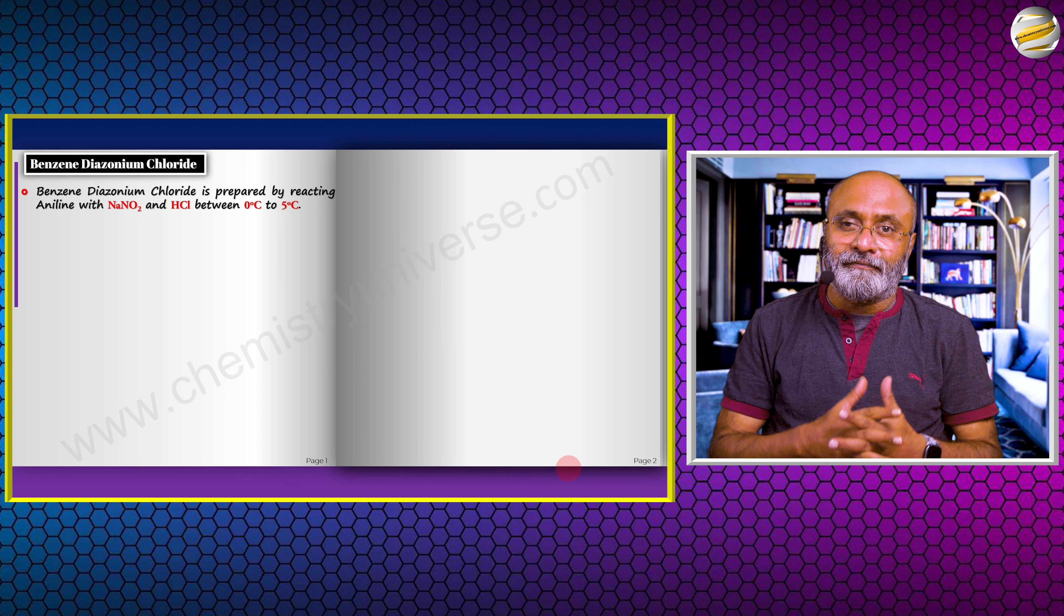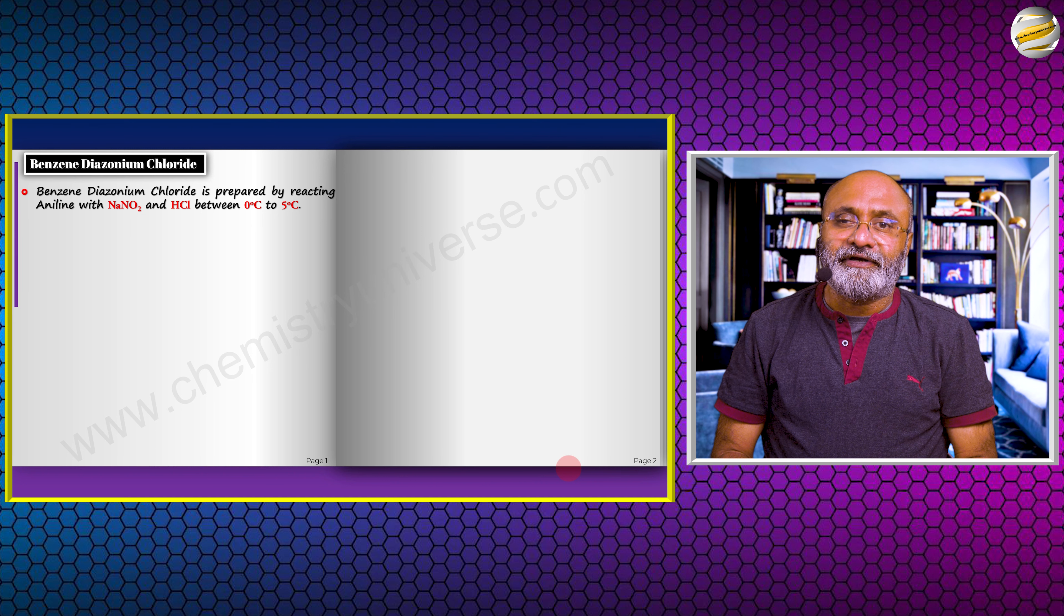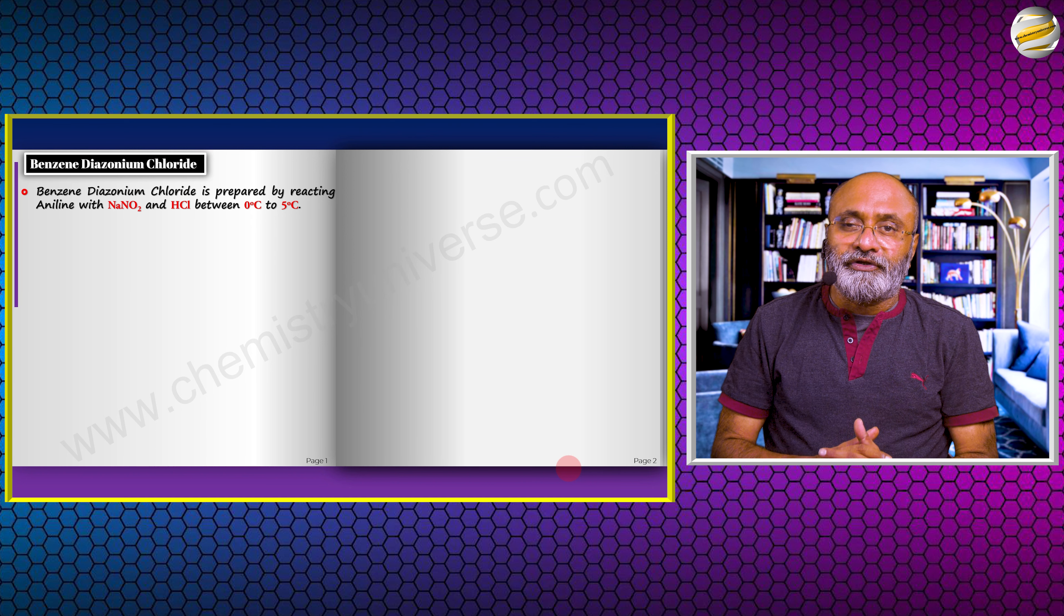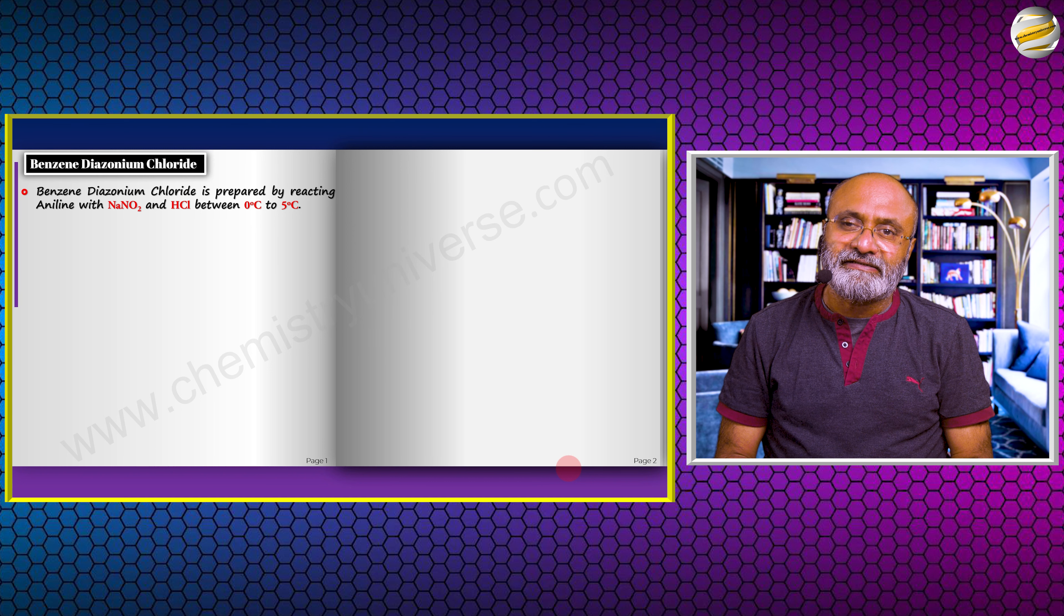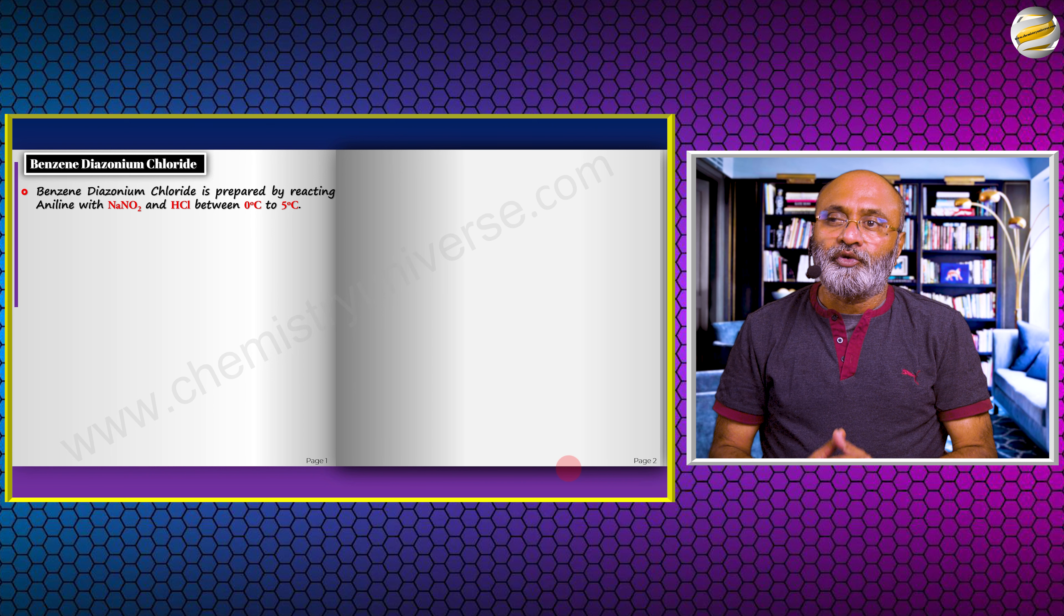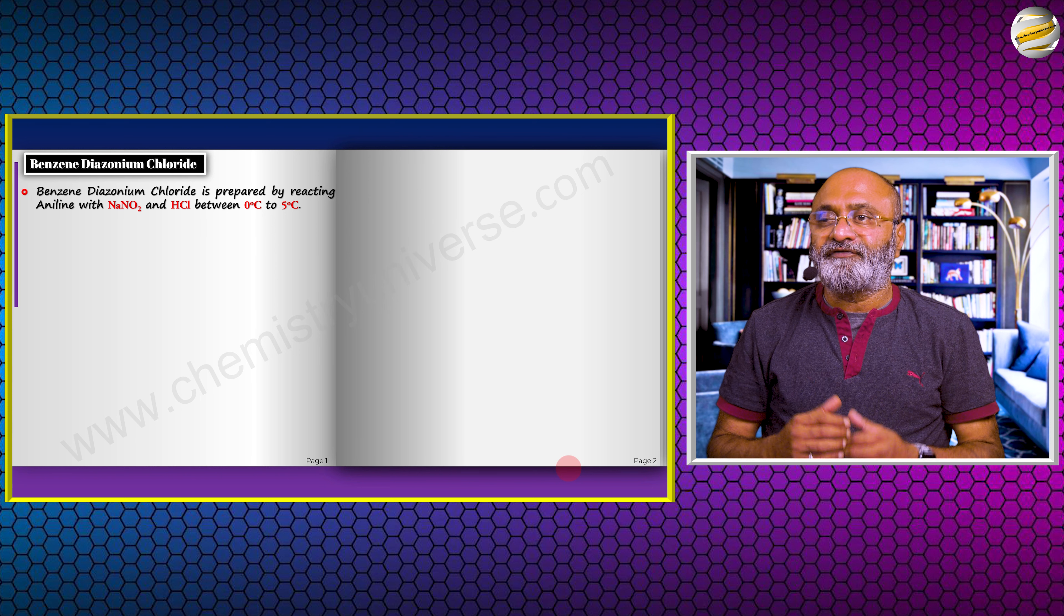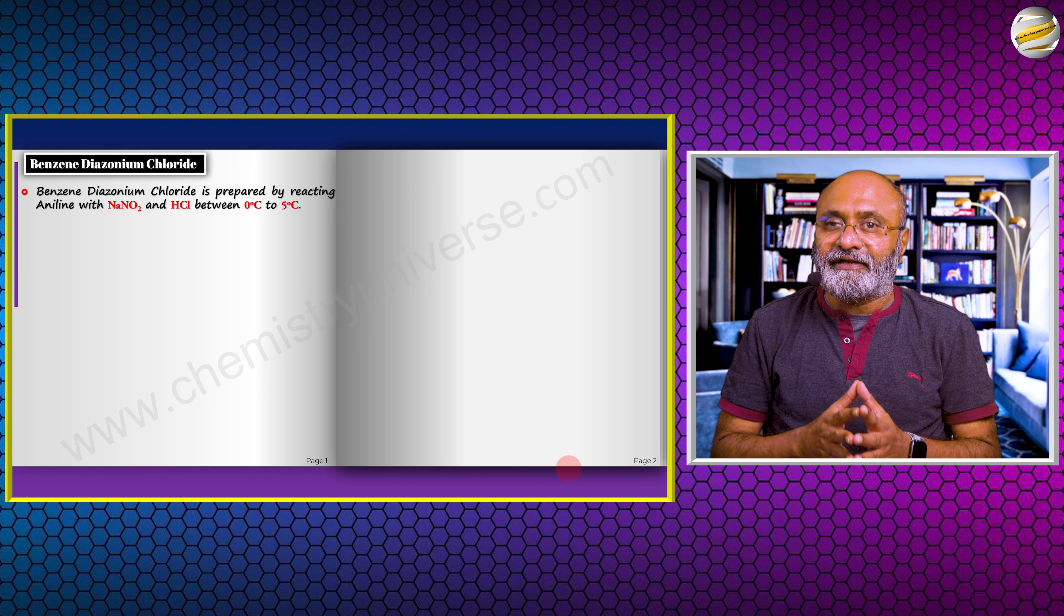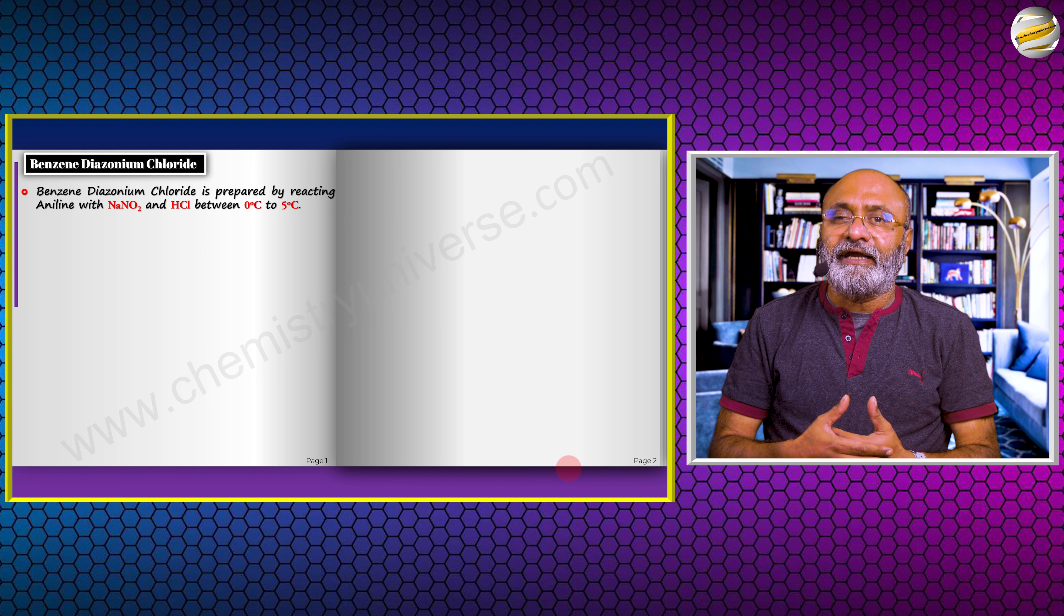In this reaction, we need NO+ ion, which reacts with aniline to produce the benzene diazonium salt. But NO+ is generated when you have HNO2 reacting with an acid. HNO2 is a pretty unstable compound, stable only up to around 5 degrees Celsius. Therefore HNO2 cannot be prepared and kept in the lab, so it is generated in situ during the reaction.